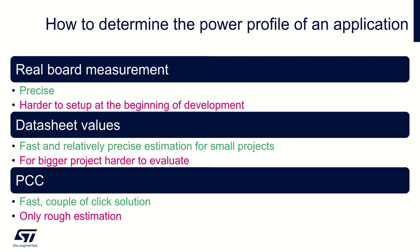The second option is the datasheet. You will dig into the datasheet to find the values for the low power modes and run modes. It's relatively fast, but still for a complex project with lots of mode changes within the application, it may be quite difficult to evaluate the final profile.